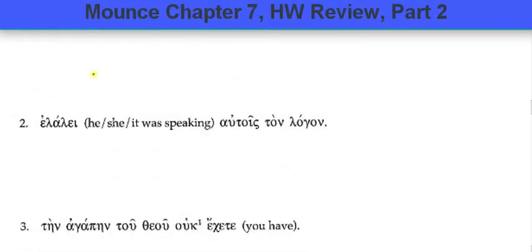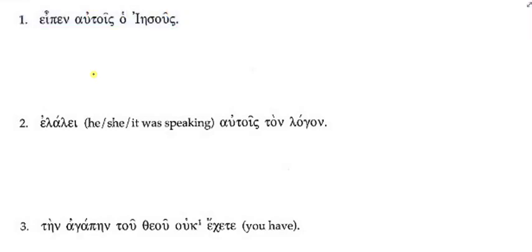Any questions on the translation work? Doesn't he give you a pen as a vocab word somewhere? I forget which chapter it was. So this is a past tense form — it's just something you've learned already. Why do we take Jesus as the subject of that verb? Because it's nominative case, and that's usually for subjects, right? So it's going to be 'Jesus said,' and then 'to them.'